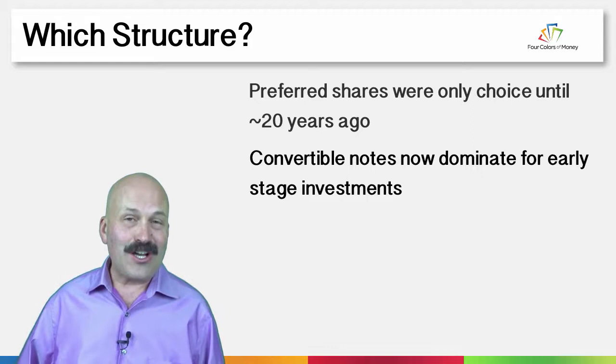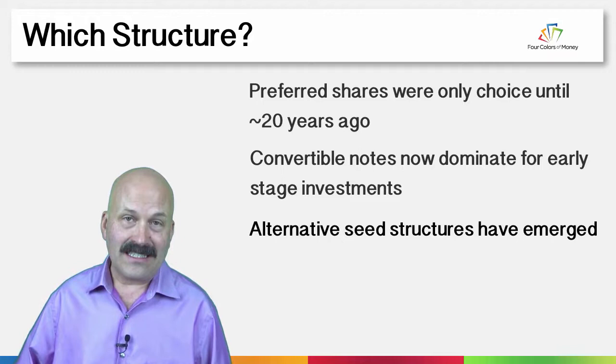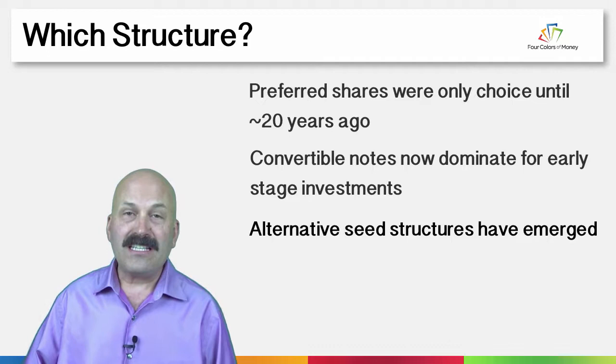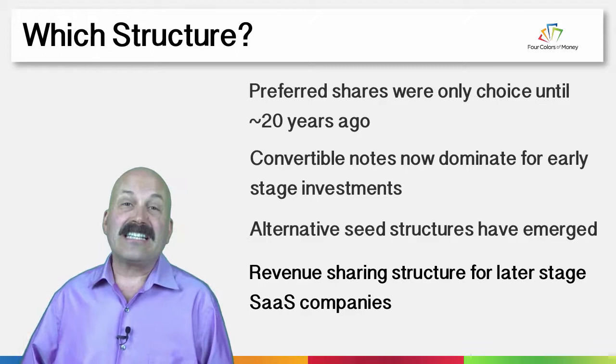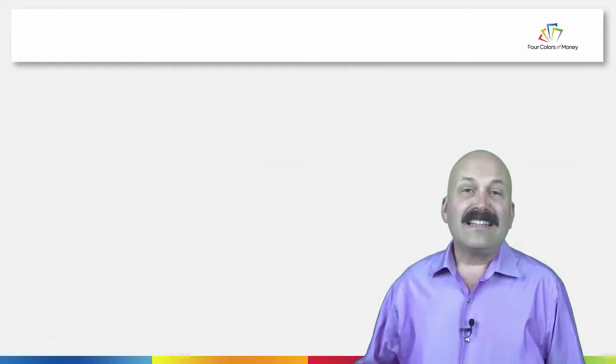In the last five or so years, there are some new alternative structures for investing into very young companies. And then at the other end of the stage, for later stage companies, there are actually some other alternatives — especially for companies that aren't necessarily on the unicorn trajectory — and I'm going to highlight revenue sharing in particular for those kinds of companies.